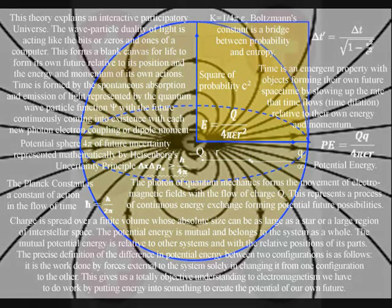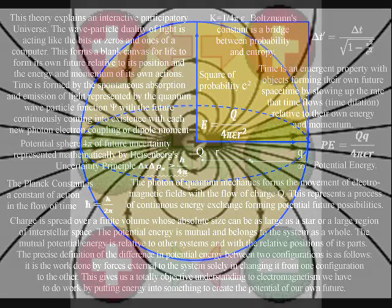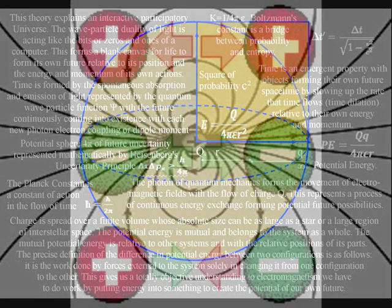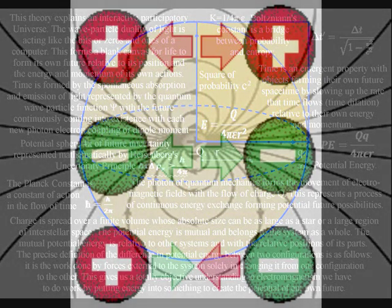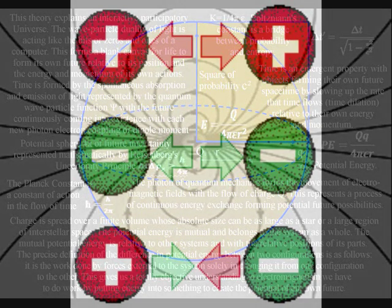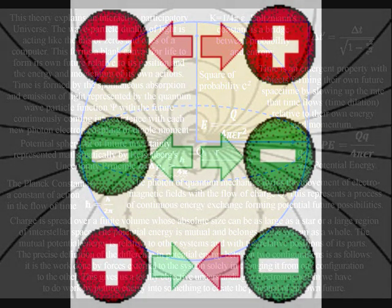We see like charge repel, representing the expansion of space that can be measured as a period of time. Unlike charge attracts, representing the demise of space and time, as an object or process becomes part of the past and ceases to exist.